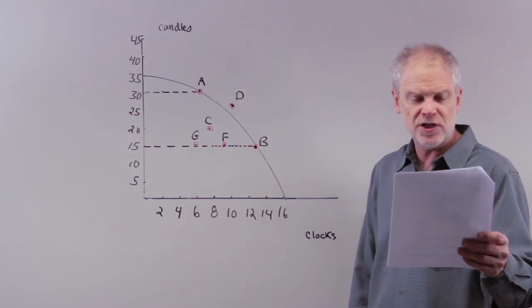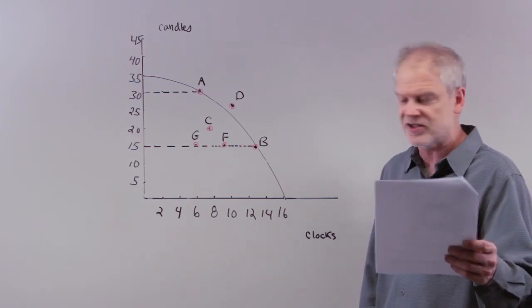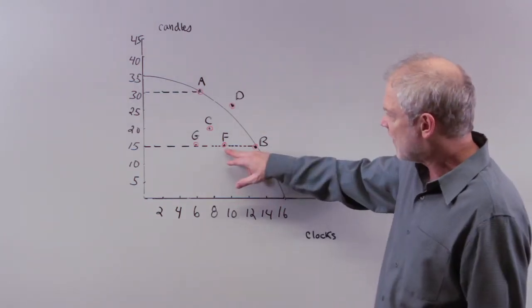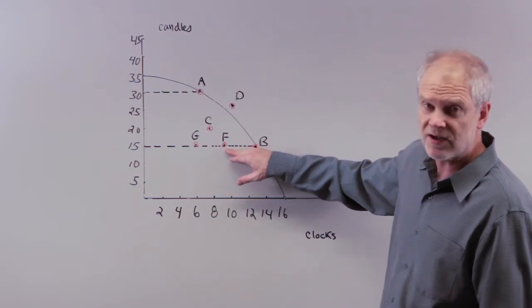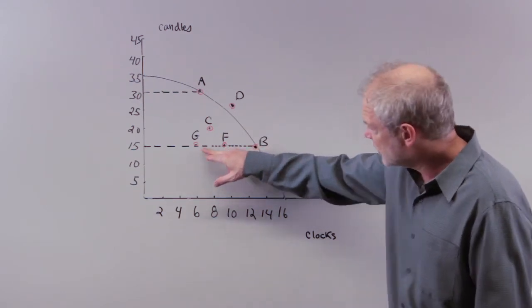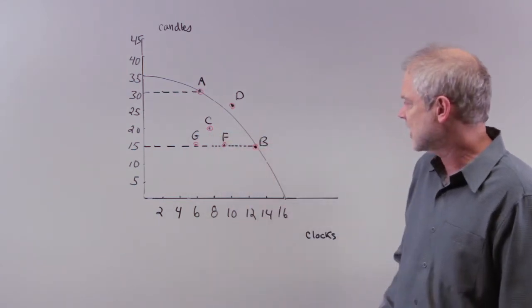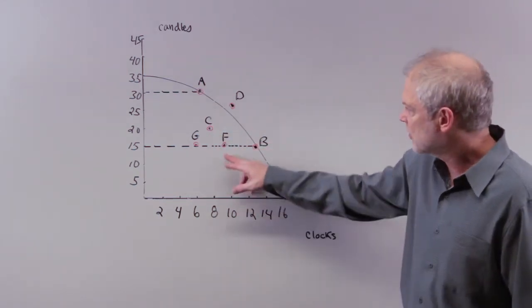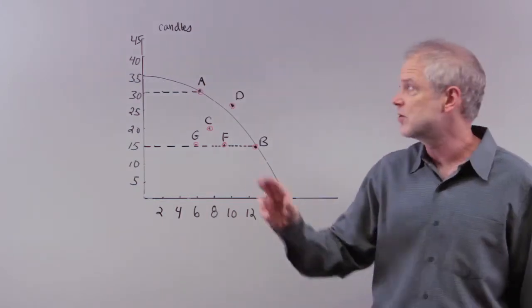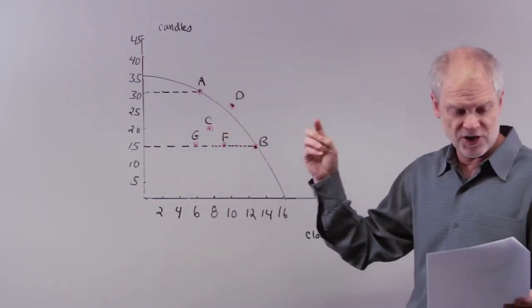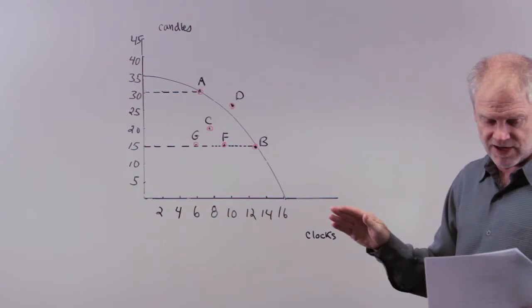C, it would be producing more candles and more clocks than at point C. So, F, they're saying, are you producing more candles and more clocks? Well, you're producing more clocks than at C. At C, you're producing six clocks. At F, you're producing, looks like, eight clocks. Okay? So, you're producing more clocks at F, but you're producing fewer candles. So, the answer to C is incorrect as well.